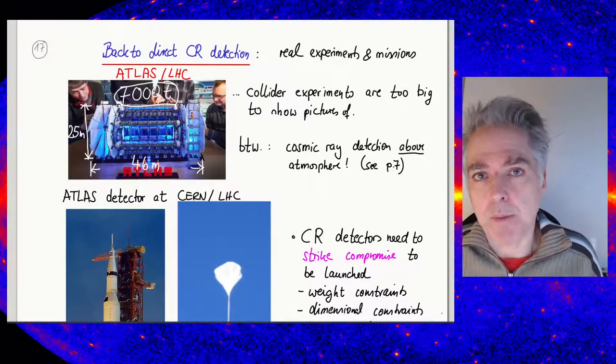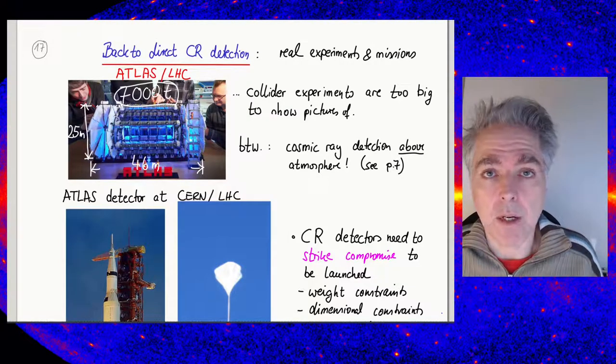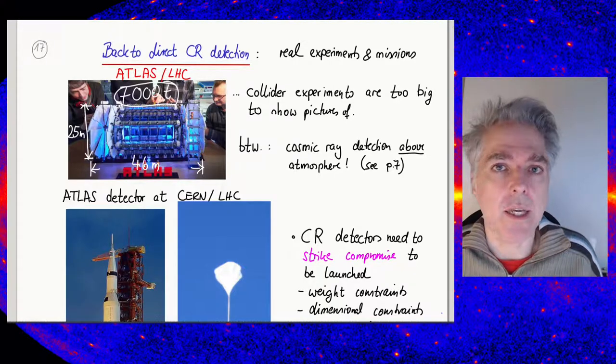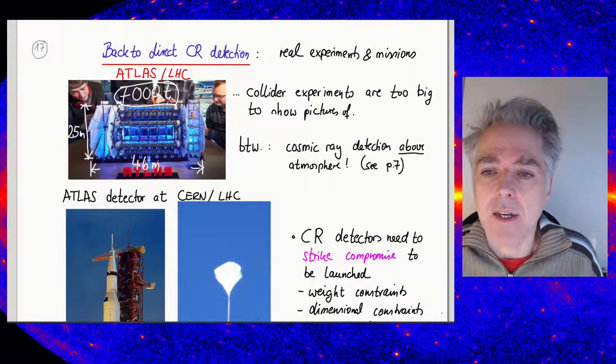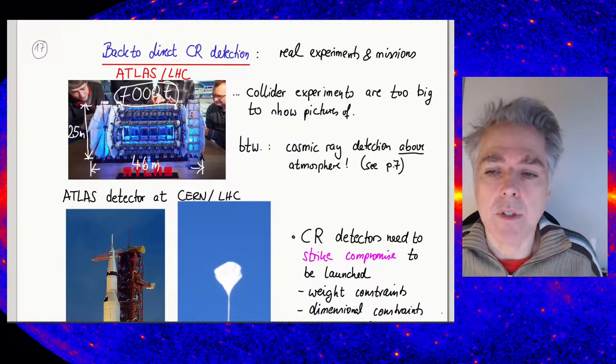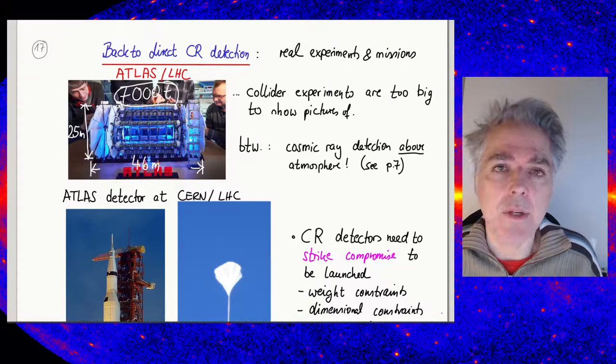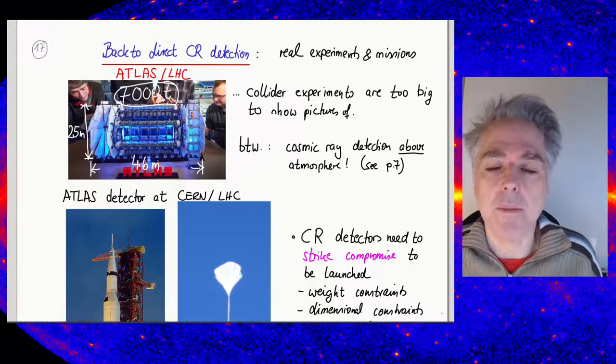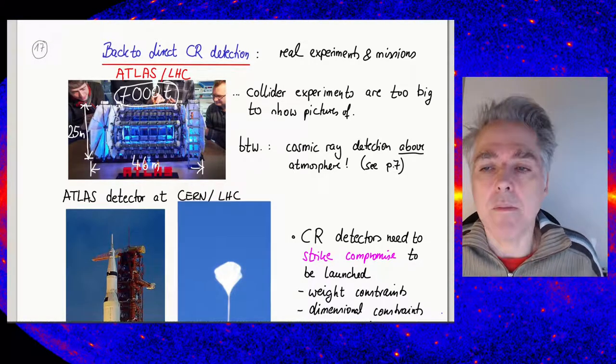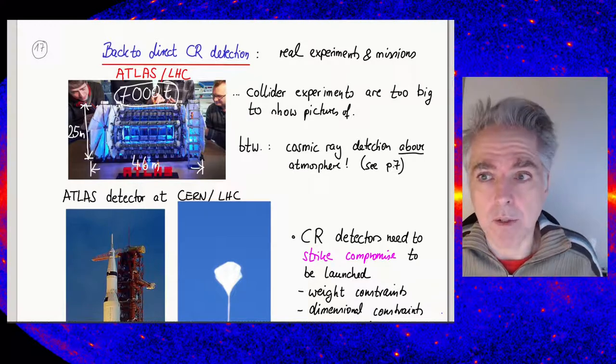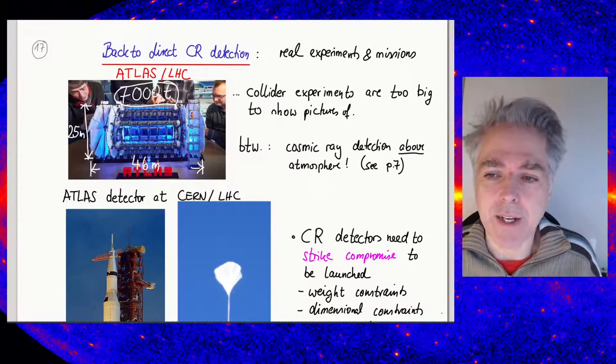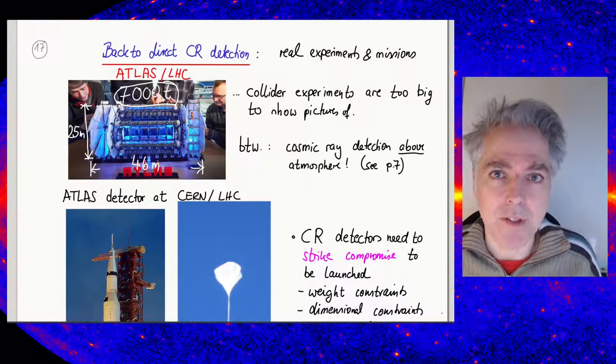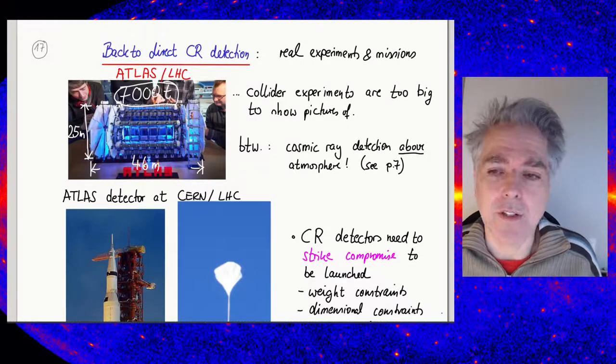We cannot just build an experiment in the same way that, for example, a calorimeter or a general purpose detector for a collider at the LHC is being built. The ATLAS Detector, shown here as a Lego toy mock-up, is a massive detector with dimensions of 46 meters by 25 meters in a cylindrical setup with a total mass of 7,000 tons—way beyond what you can bring into space. They're actually even too big to show in a picture, that's why I put this Lego mock-up here, because pictures from the cavern only show parts of the detector and you don't get an overview.